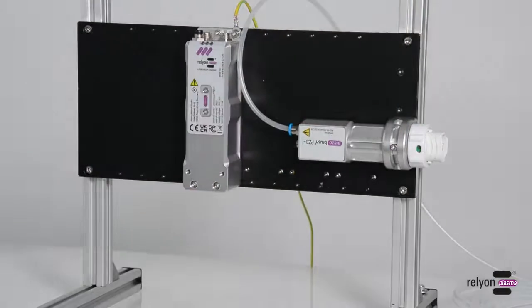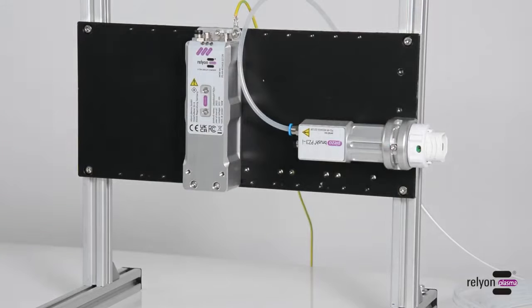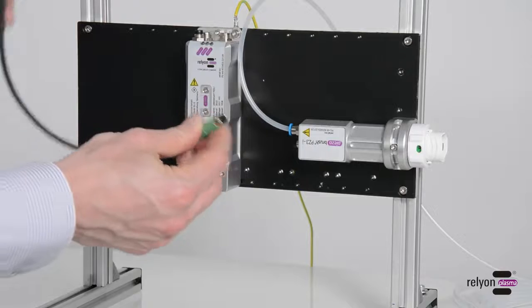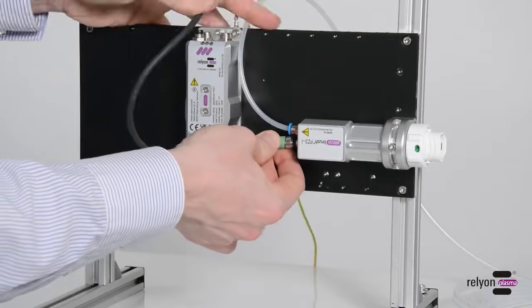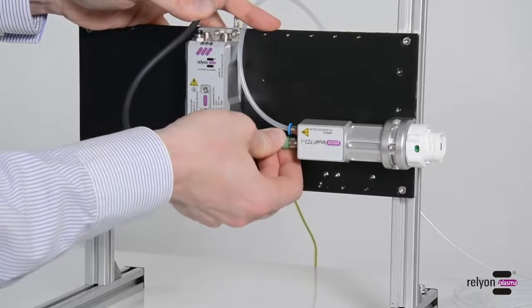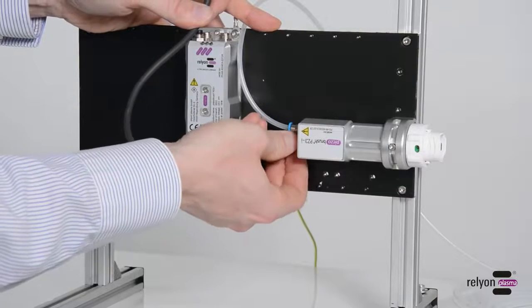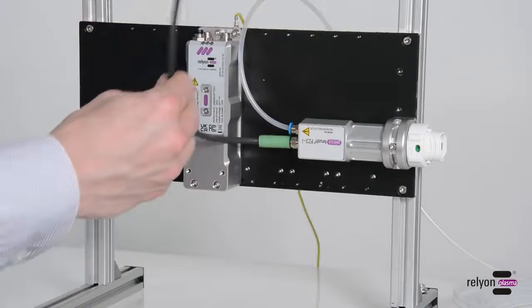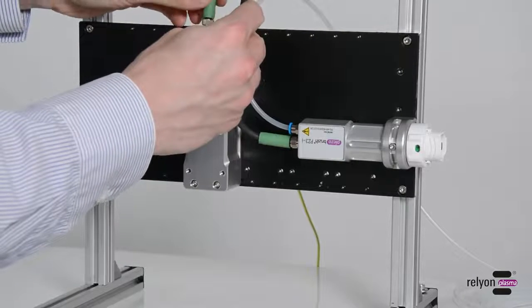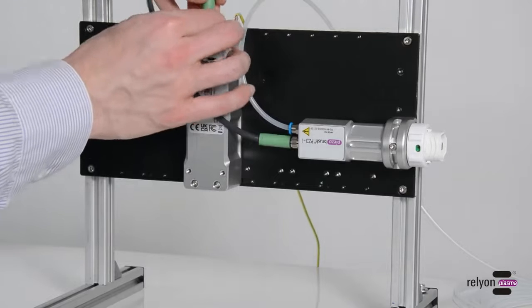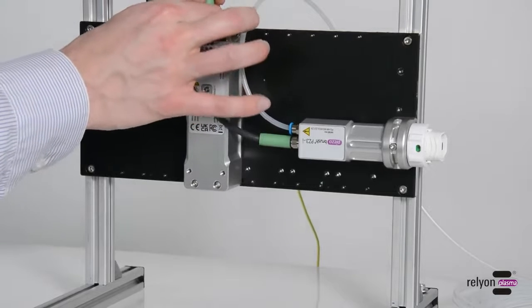The supplied cable has a length of 0.3 meters. If necessary, longer cables can be used. Due to the fact that with longer cable lengths, the EMC is strongly depending on the actual integration, we recommend an EMC test in the final setup. The other connections are made as for the standard setup.